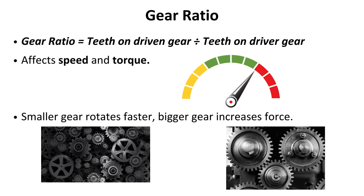Gear ratio equals the number of teeth on the driven gear divided by the number of teeth on the driver gear. The gear ratio affects both speed and torque — a smaller gear rotates faster, while a bigger gear increases force.